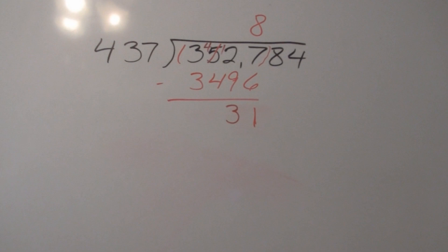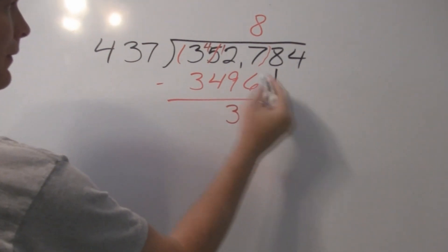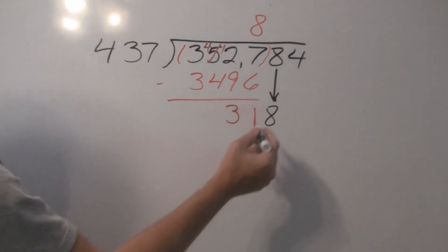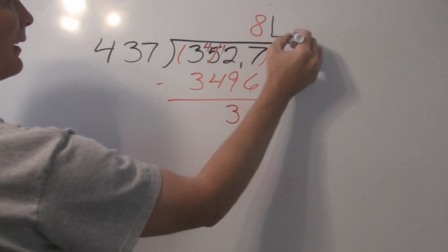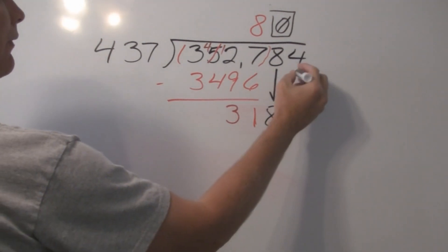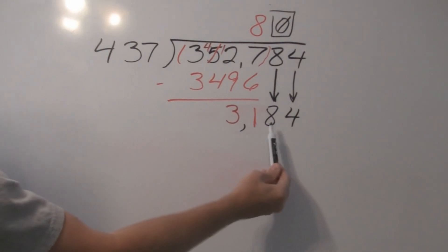Next, what we're going to do is we're going to drop this number 8 down from the dividend. We're going to bring that 8 right here. Now we have 318. Next, what we're going to do is we're going to see, how many times will 437 go into 318? Well, we see that we can't even get one time into 318. So our answer up here in the next block is 0. See that? We're going to drop another number down from our dividend.